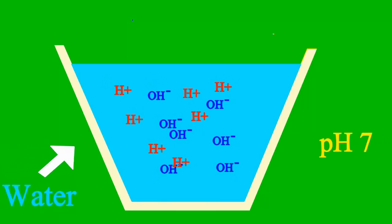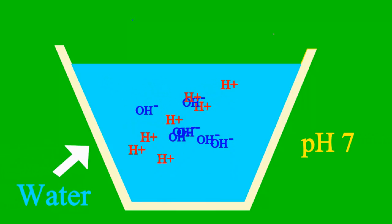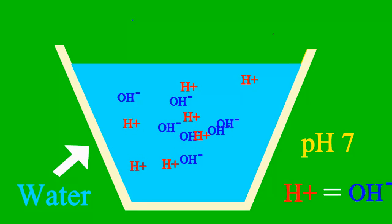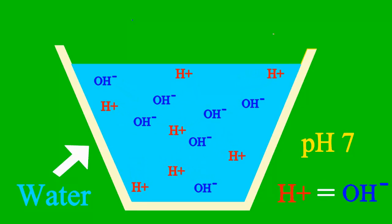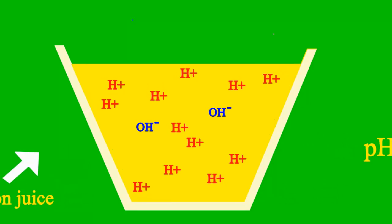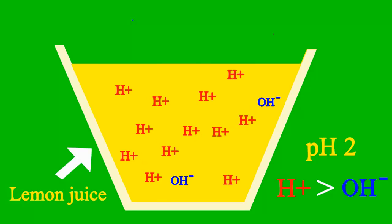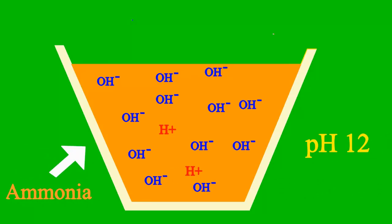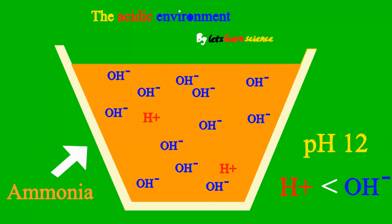When the pH is 7, it's a case where the sample is neither an acid nor a base. But less than 7, it's an acid; we say more than 7, it's a base all the way.